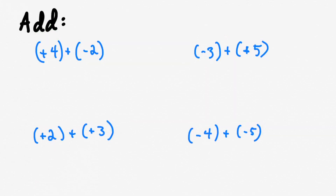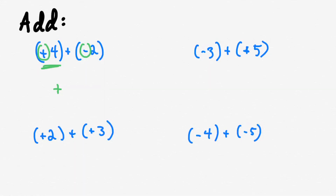We're going to bang off four quick examples: four plus negative two, negative three plus five, positive two plus positive three, and negative four plus negative five. Let's do the first one. I ask myself which of these two integers has the largest absolute value — that's four. So my answer is going to be positive. Now are the signs different? Yes they are, so that tells me I'm going to do a subtraction — I find the difference between four and two, which is two. Four minus two equals two.